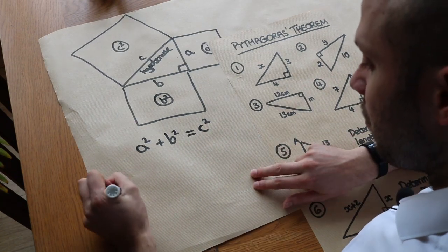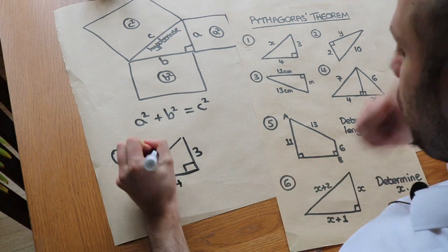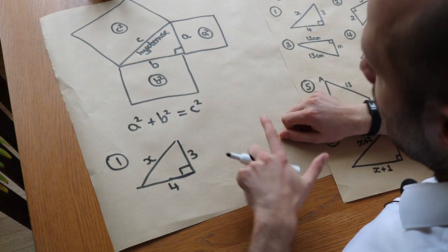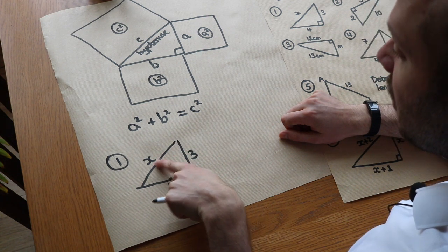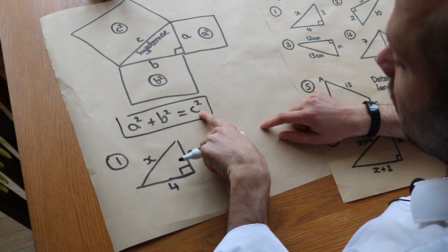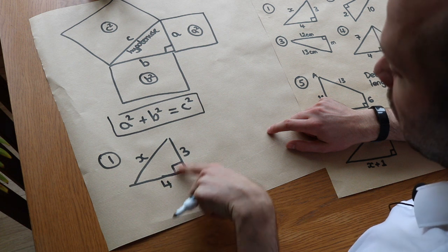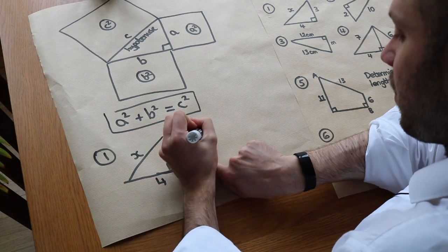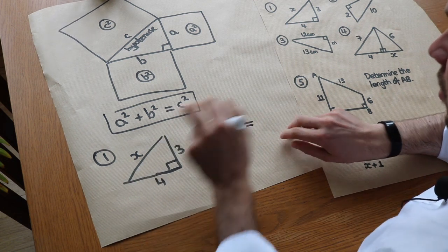Let's illustrate this with a few examples. We have a triangle with sides 3, 4, and x, and we want to find x. The first thing is always to identify the hypotenuse — it's the longest side, opposite the right angle, and it goes on its own on one side of the equation. We can make 3 and 4 our two shorter sides, so: 3² + 4² = x².